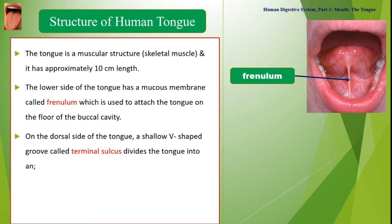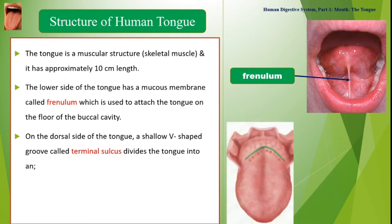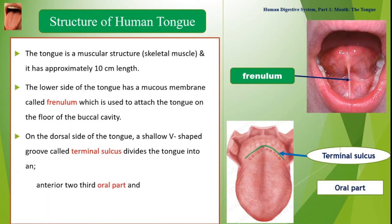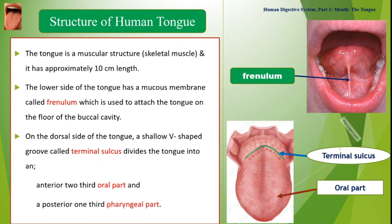On the dorsal side of the tongue, a shallow V-shaped groove called the Terminal Sulcus divides the tongue into an anterior two-thirds oral part and a posterior one-third pharyngeal part.